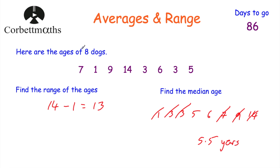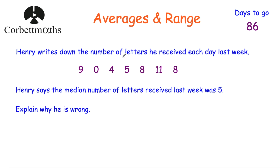So we've worked out the mean, the mode, the range and the median of these ages. Now, here's another question. Henry writes down the number of letters he receives each day last week: 9, 0, 4, 5, 8, 11 and 8. Henry says the median number of letters he received last week was five. We've been asked to explain why he's wrong. Feel free to pause the video now to give this question a try yourself.